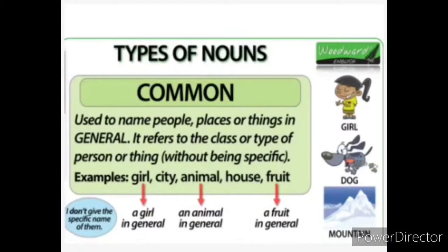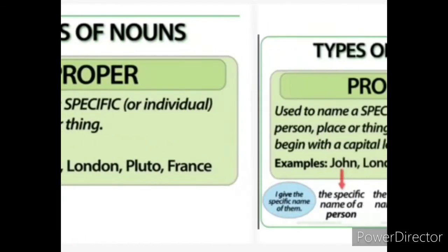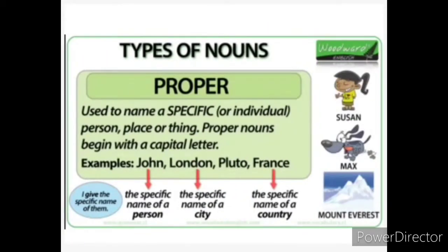Now we are going to the next: proper noun. Proper noun is used to name a specific or individual person, place, or thing. For example, John, London, Pluto, France. John is the specific name of a person; London is the specific name of a city — we gave a name to the city. France is the specific name of a country. So if you give a particular, specific name to a noun, that is called a proper noun.